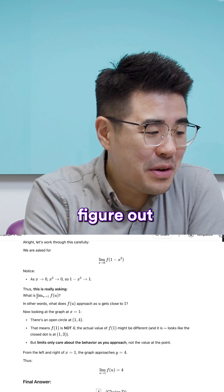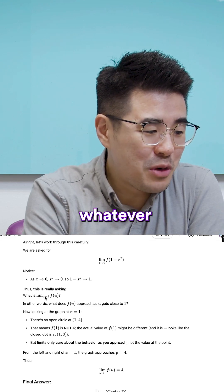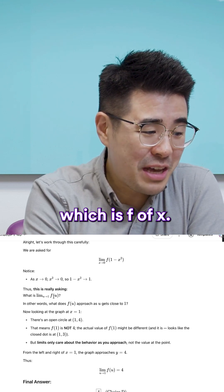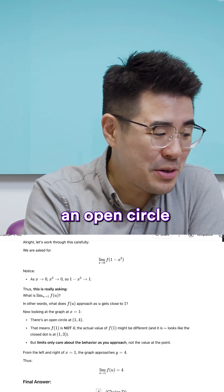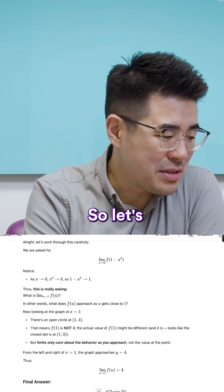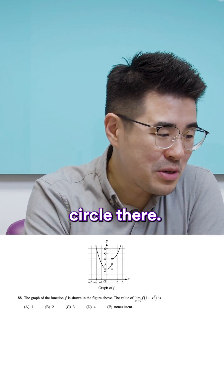And then it's saying, well let's figure out what the limit as whatever approaches 1 of the outer function, which is f of x. And it says there's an open circle at 1,4. So let's look at the graph. Yep, there is an open circle there.